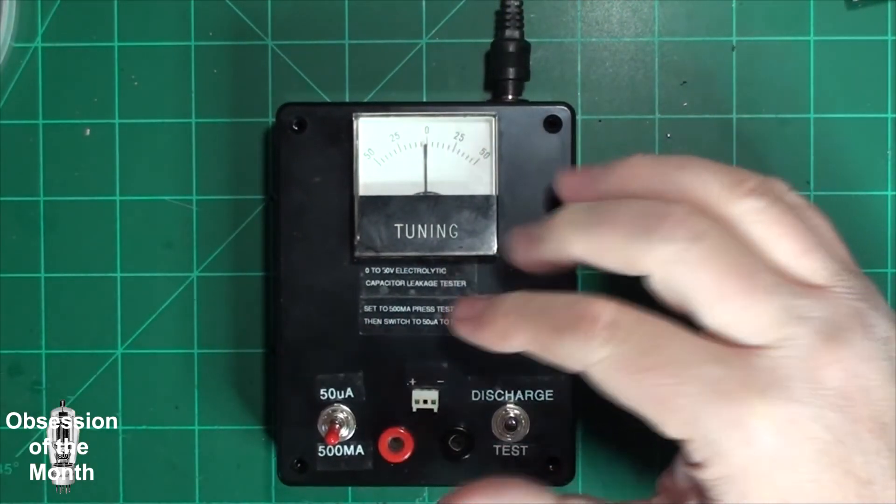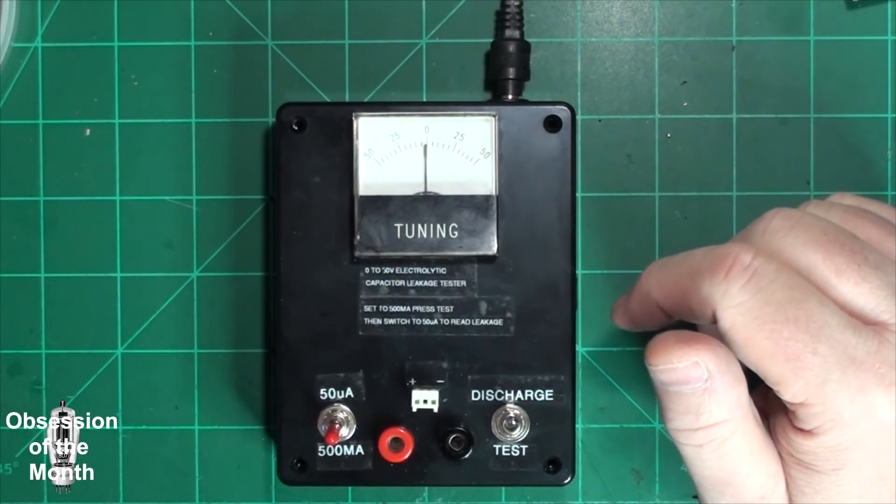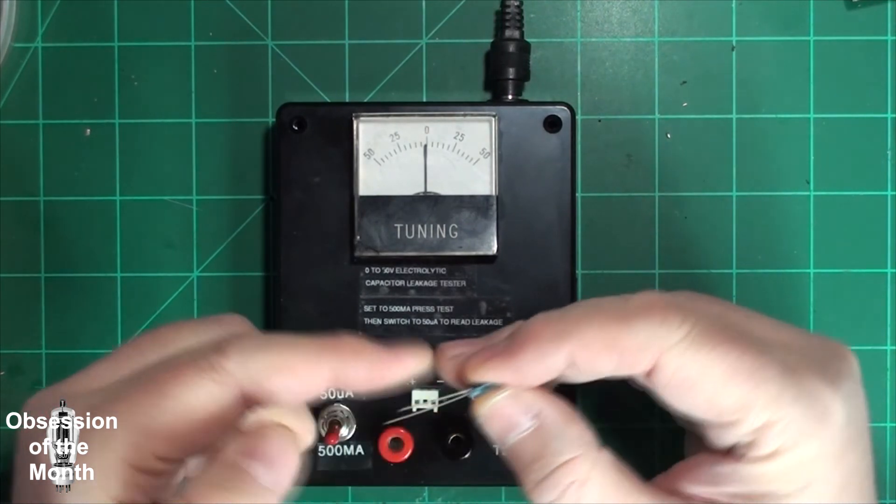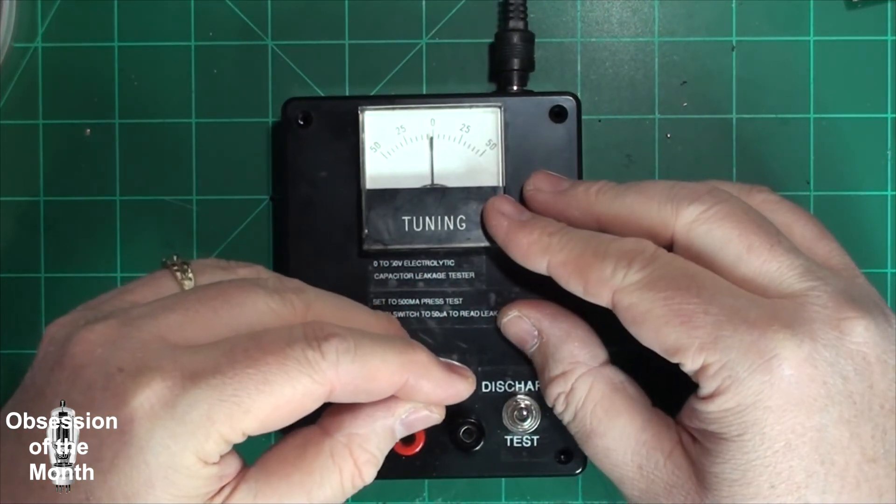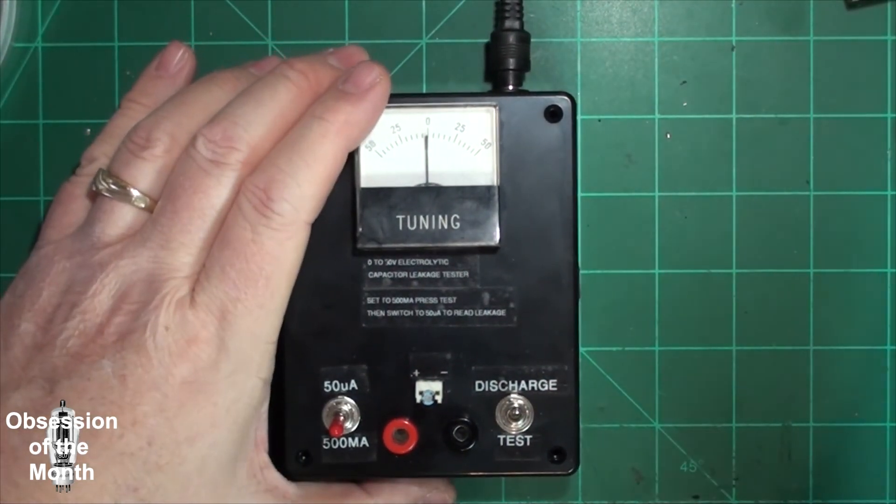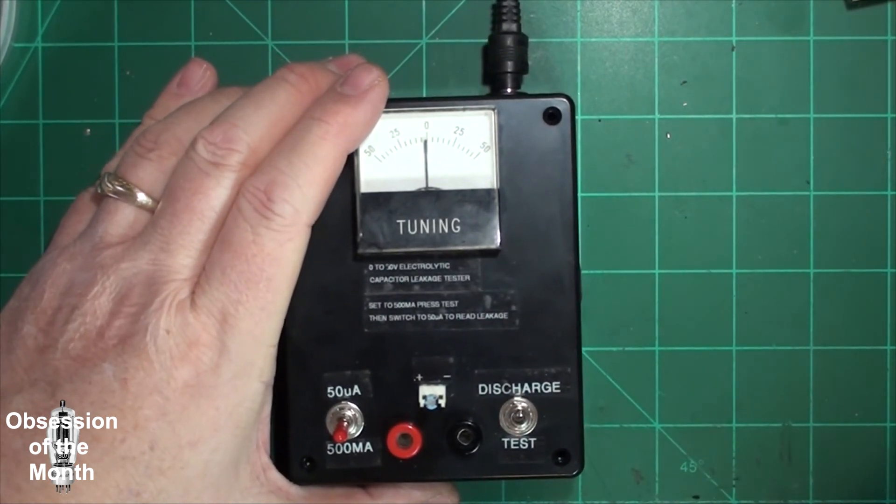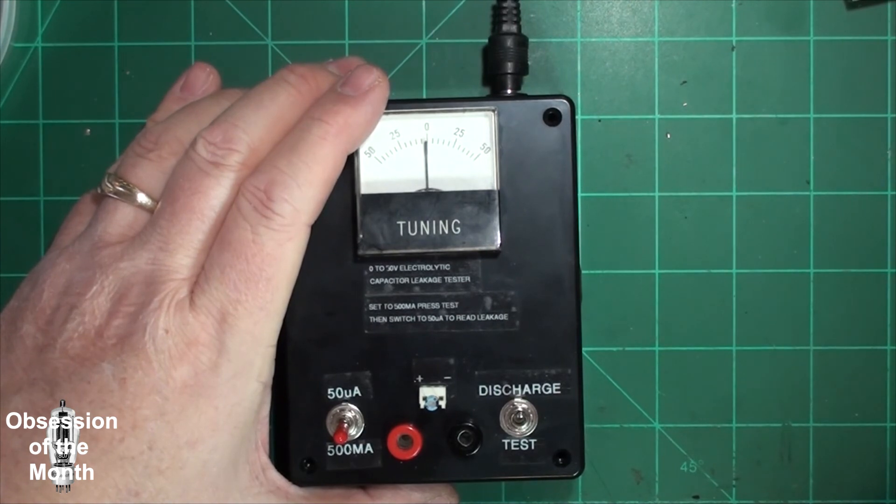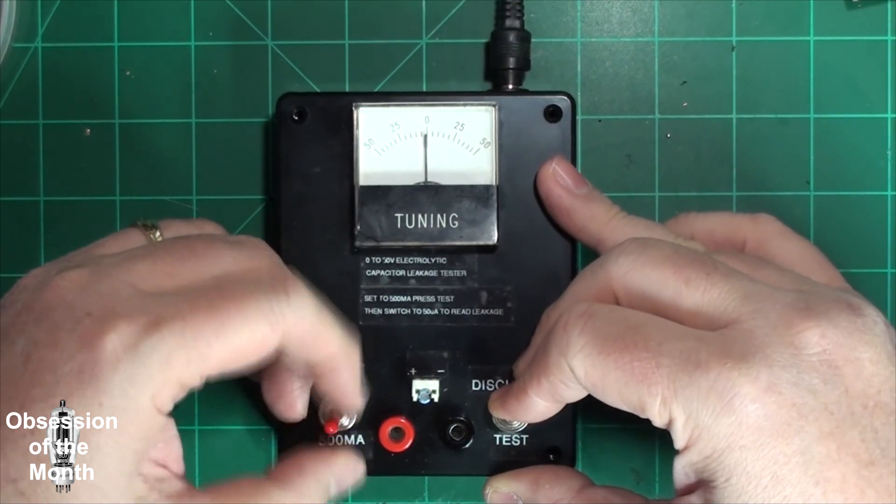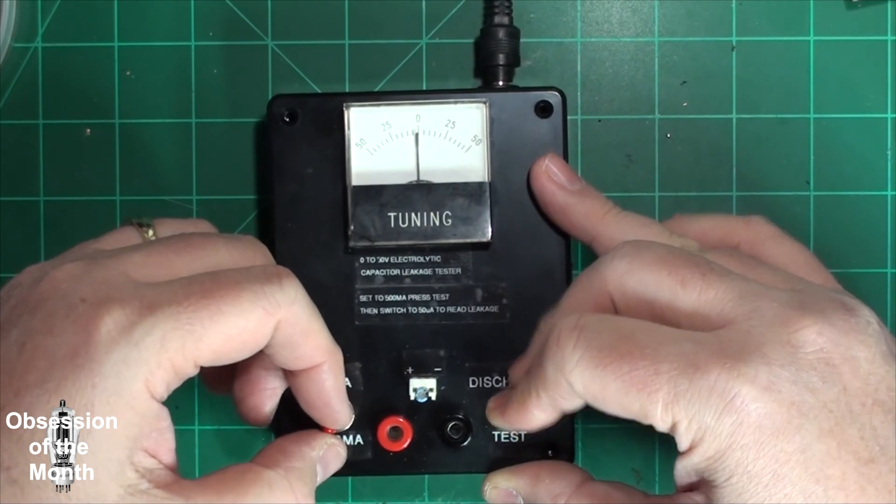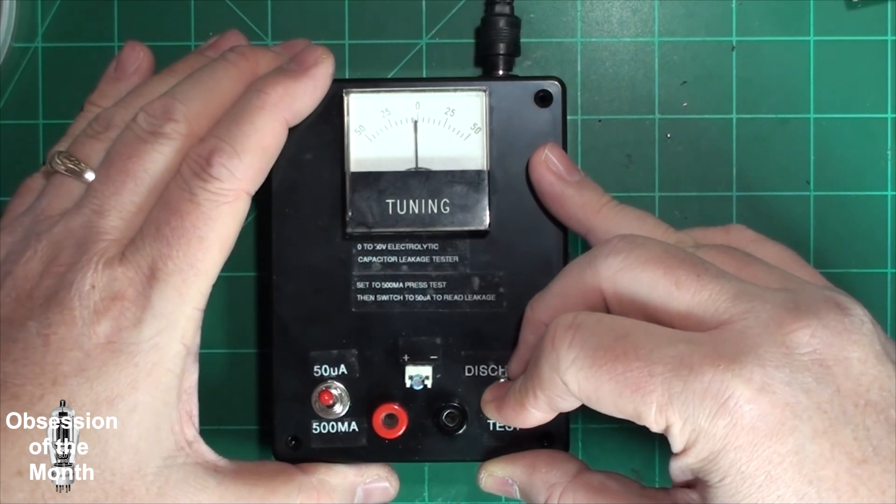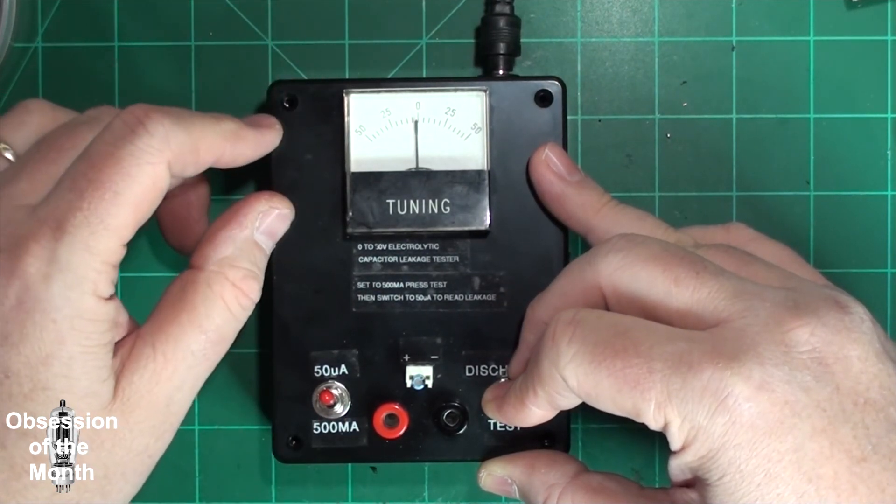And we'll do this is a 0.1 microfarad 50 volts. And you can see that with the 0.1 microfarad, it doesn't do much. So we can put it to 50 microamps. And you can see that this doesn't seem to have any leakage at all.